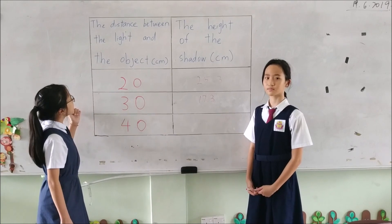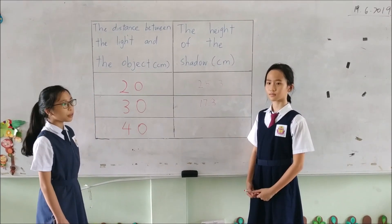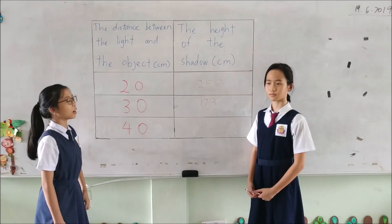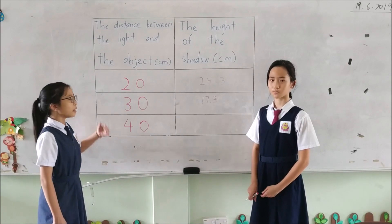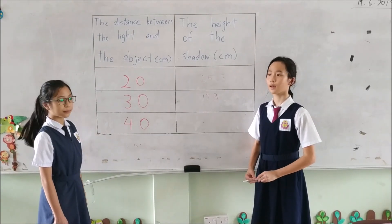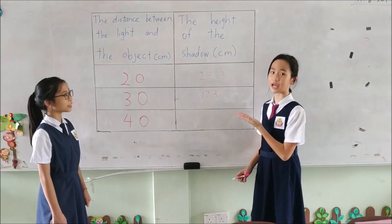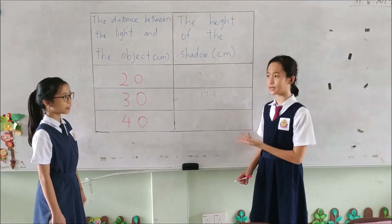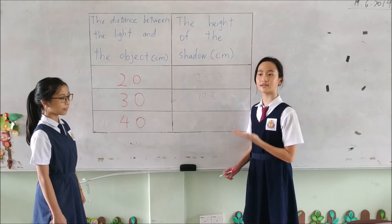When the distance between the light and the object is 40cm, then the height of the shadow will be 30.5cm.